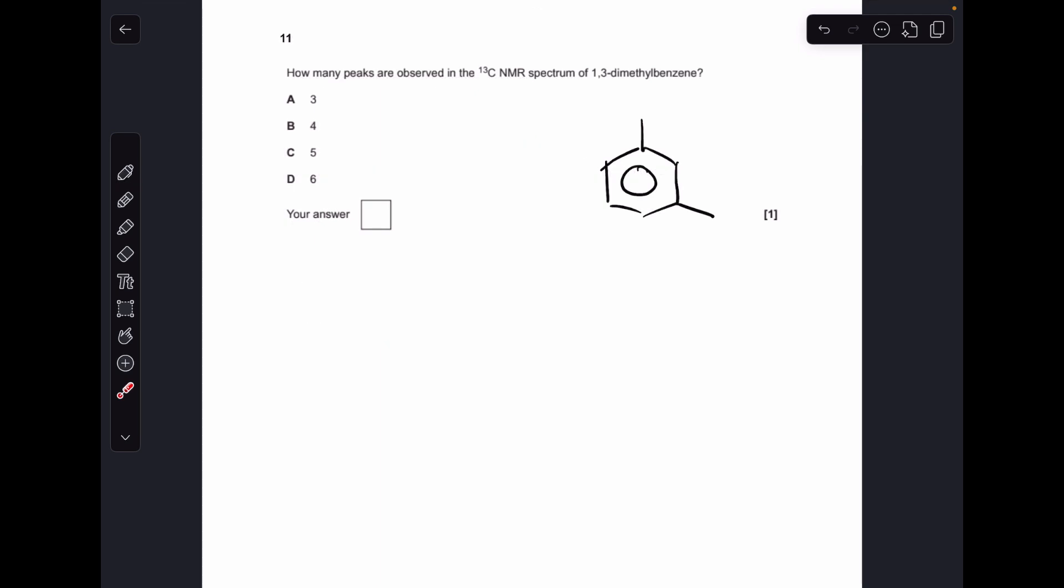And finally number 11, so obviously we need to know what 1,3-dimethylbenzene looks like, looks like that. Have we got any lines of symmetry? Yes we have, so how many different carbon environments? One, two, three, four, five. So the answer was C.